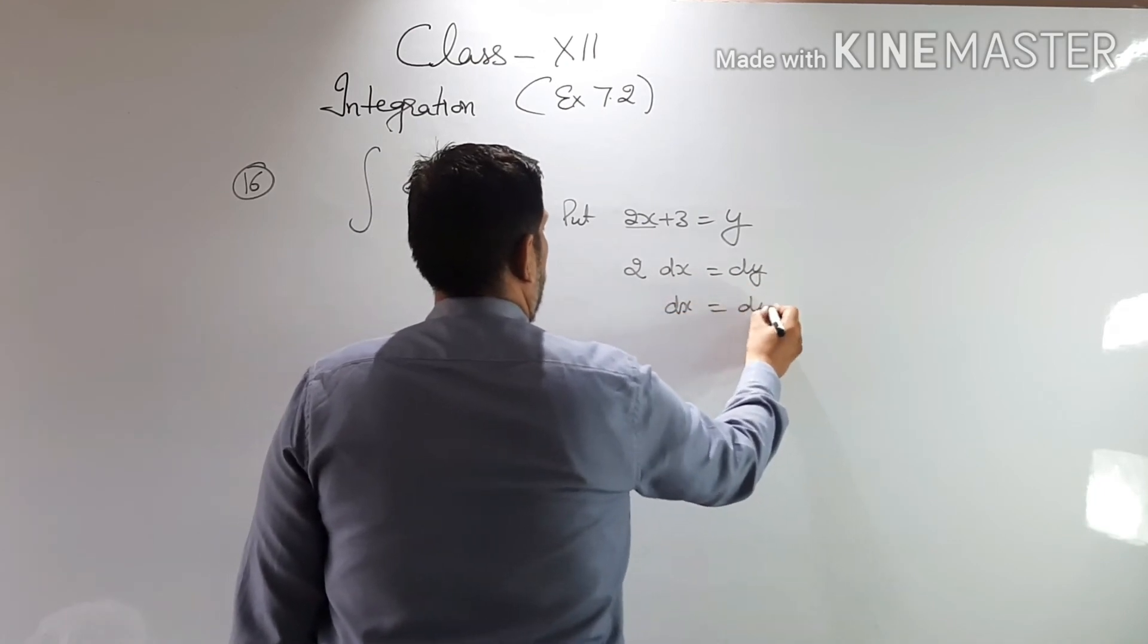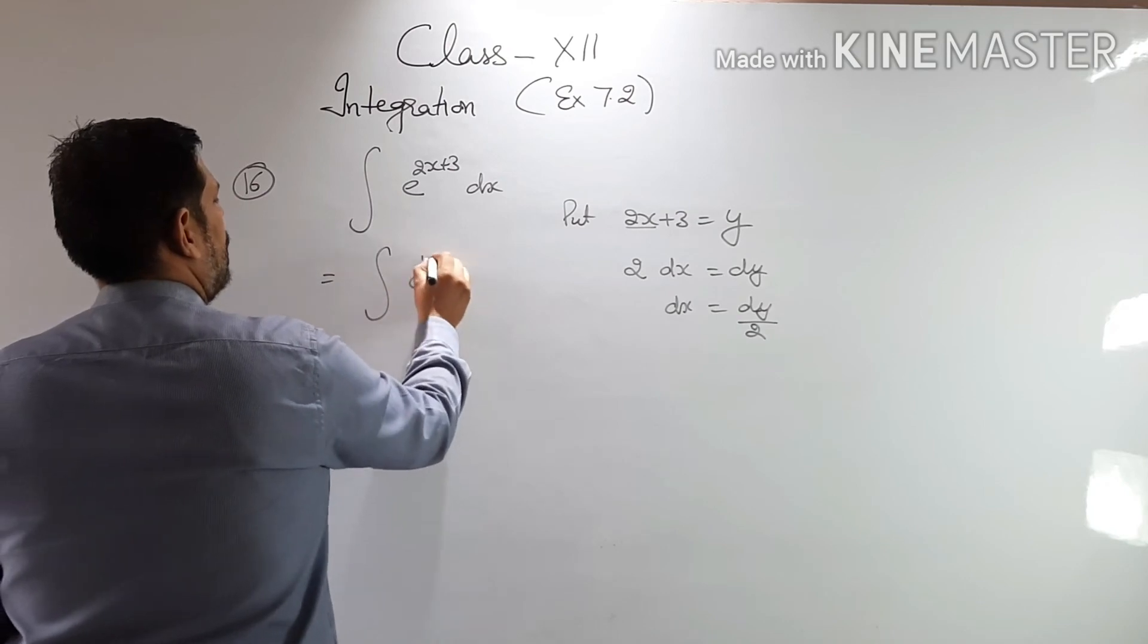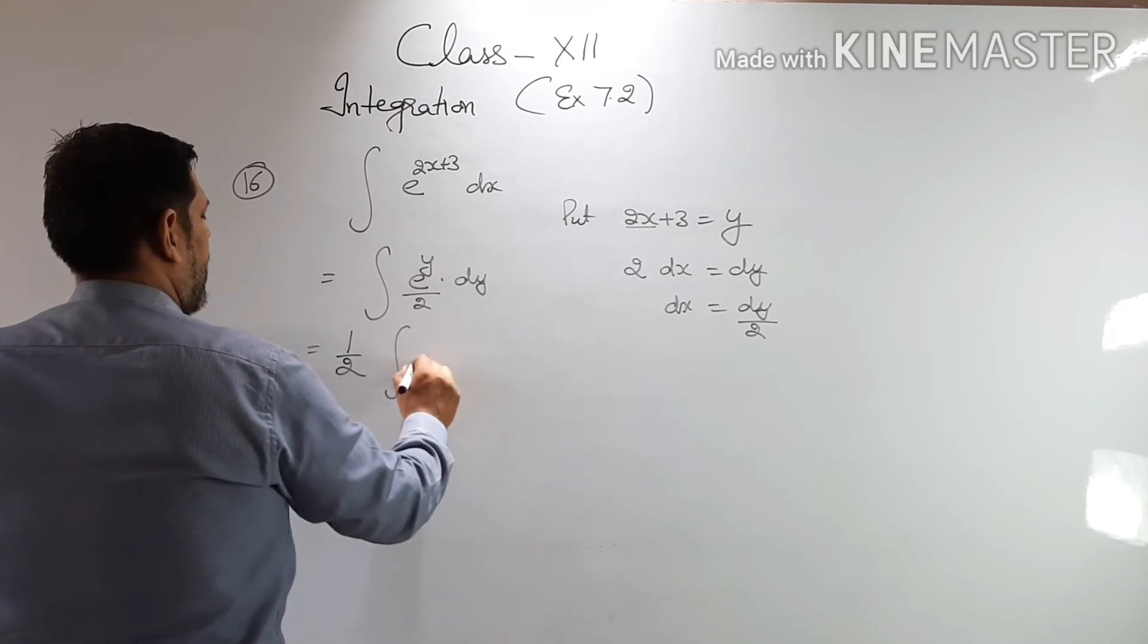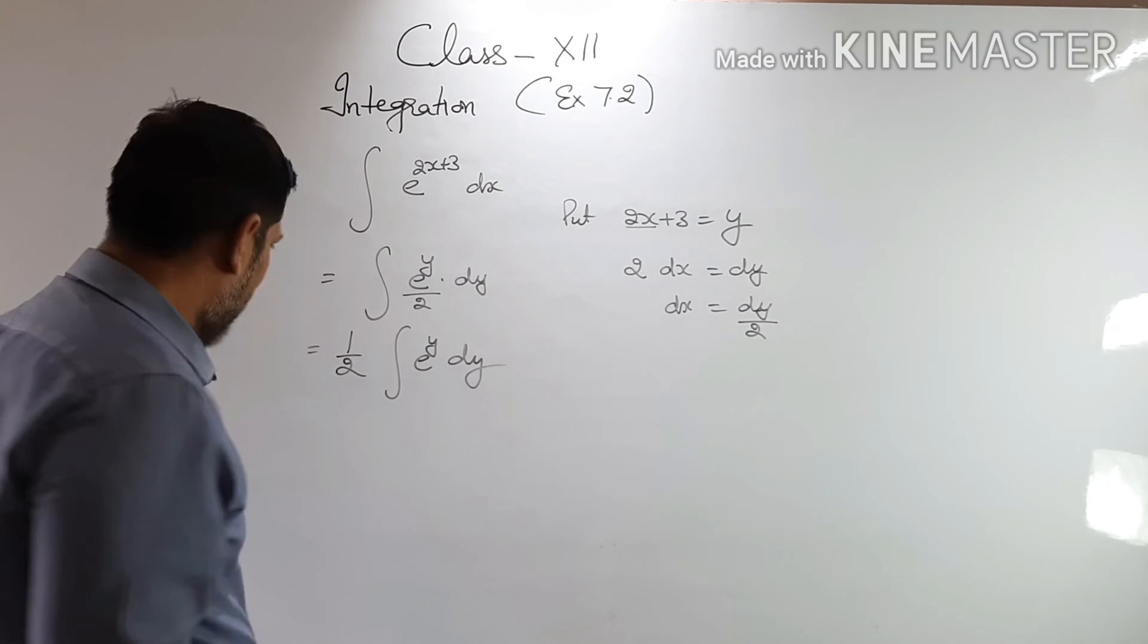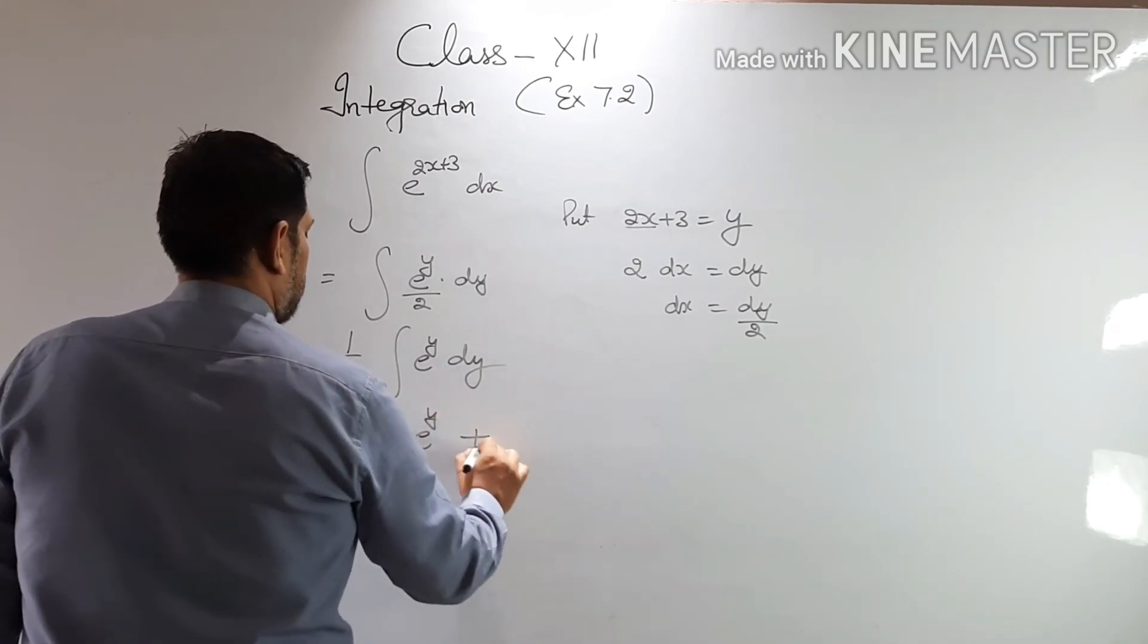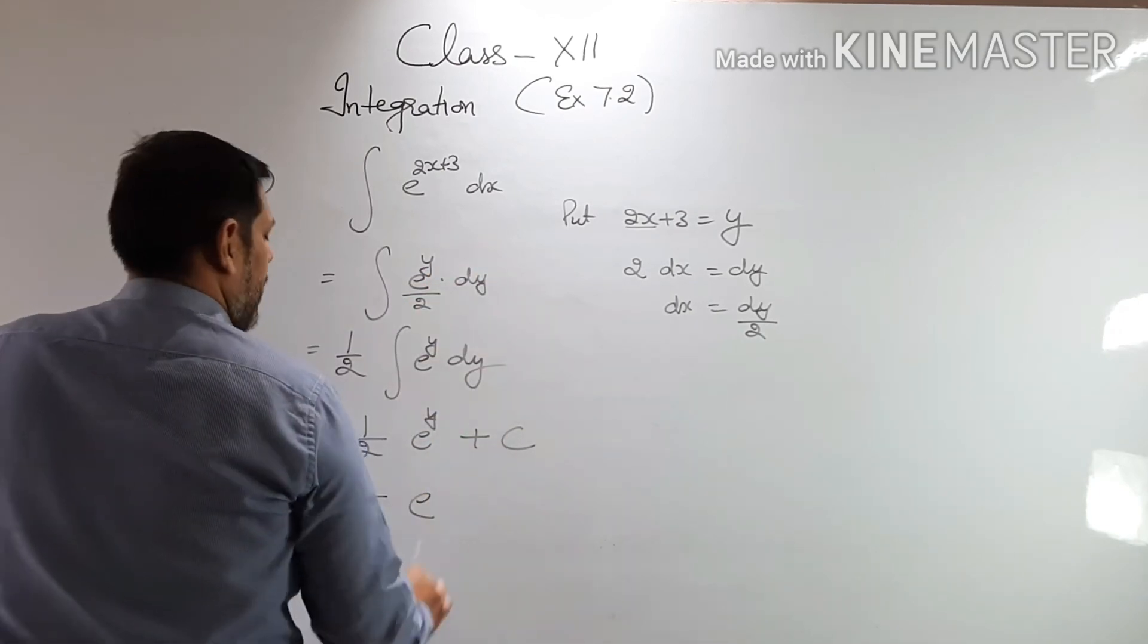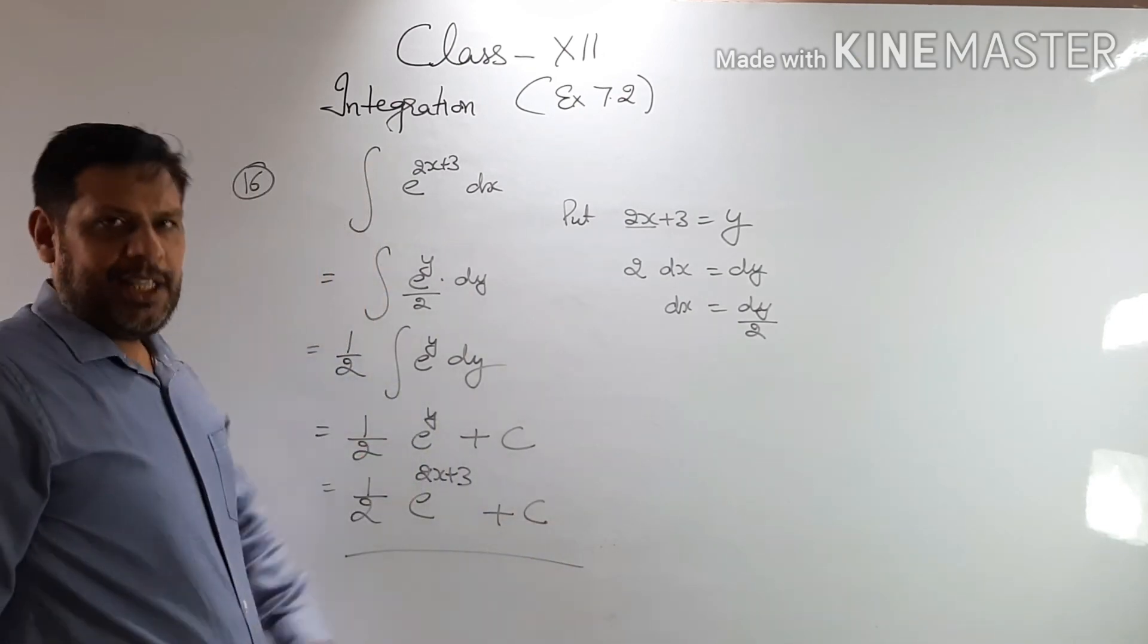And this has become e raised to the power y into dy by 2. 1 by 2 is common, e raised to the power y dy. And integral of e raised to the power y is again e raised to the power y plus c. So we'll put the value of y again and our answer will be 1 by 2 e raised to the power 2x plus 3 plus c.